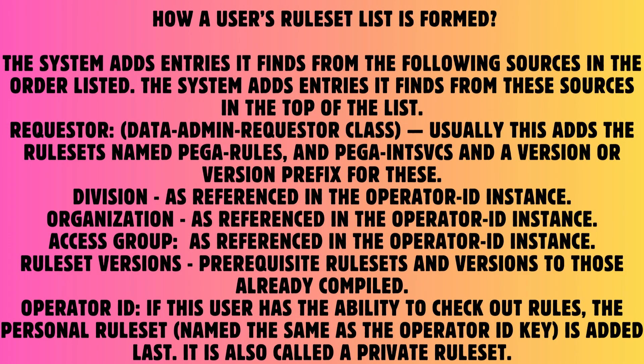Question: How is a user's rule set list formed? Answer: The system adds entries from the following sources in order: Requester (Data-Admin-Requester class, usually adds rule sets named PegaRules and PegaSVCs); Division, as referenced in the operator ID instance; Organization, as referenced in the operator ID instance; Access group, as referenced in the operator ID instance; Rule set versions — prerequisite rule sets and versions to those already compiled; Operator ID — if the user has the ability to check out rules, the personal rule set (named the same as the operator ID key) is added last. This is also called a private rule set.